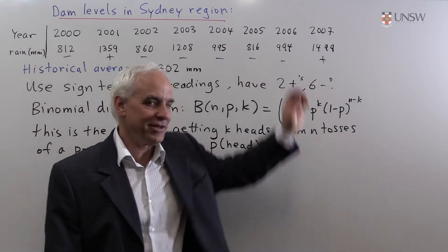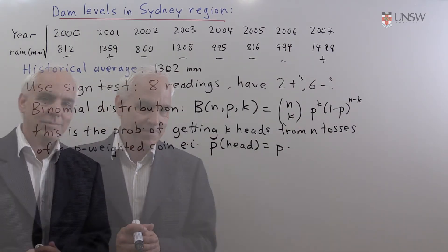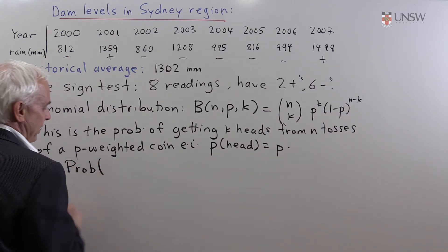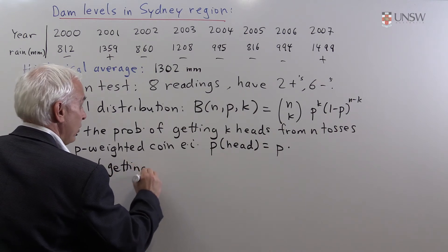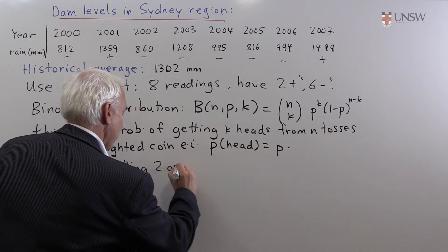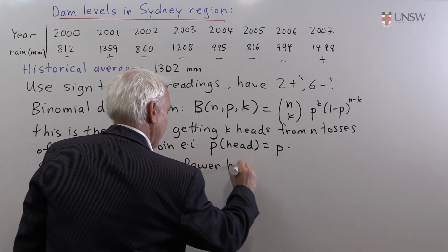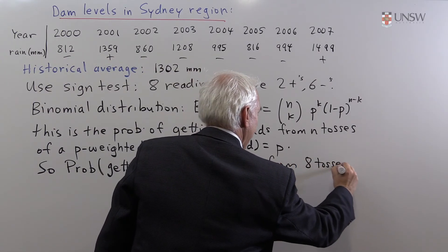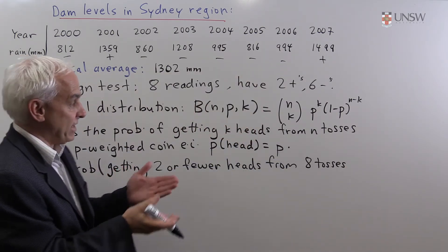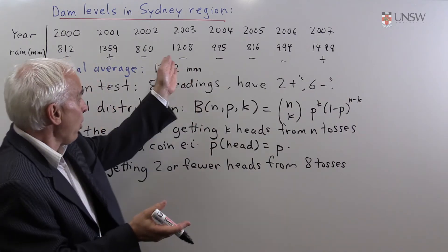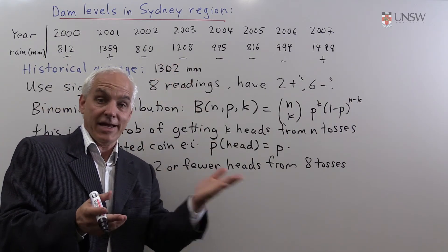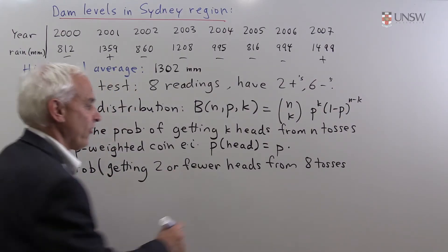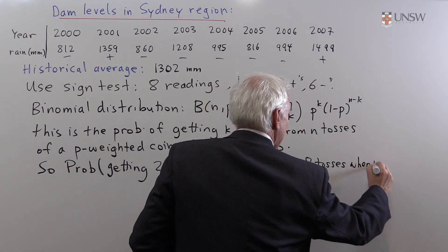So what we're going to do is look at this situation as basically a coin tossing event. So the probability of getting two or fewer heads from eight tosses of a fair coin. Because basically we're assuming that the probability of getting more than the long term average equals the probability of getting less than the long term average. Both of those are equally likely. So getting two or fewer heads from eight tosses when p equals a half.